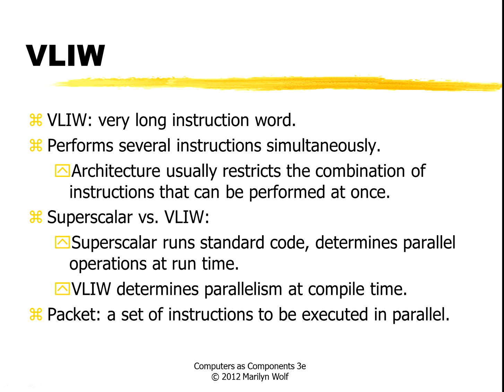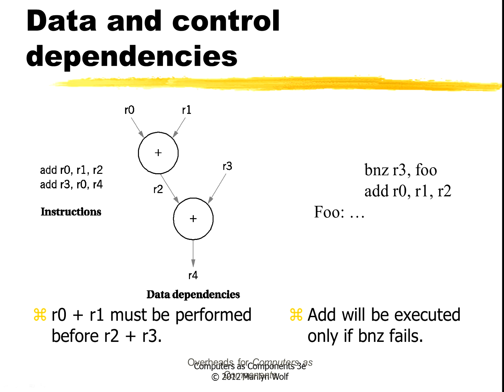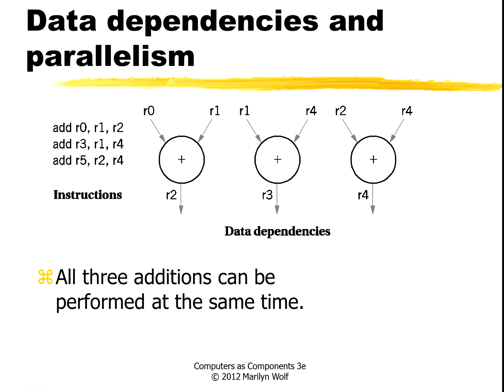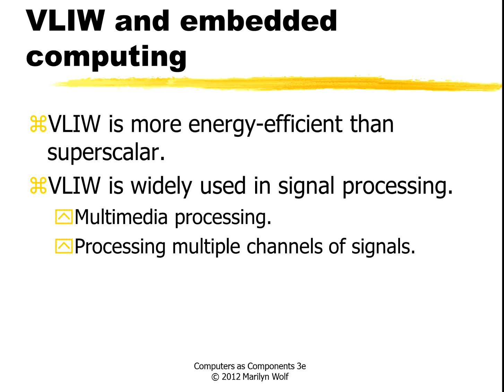In VLIW machines, a packet is a set of instructions to be executed in parallel. We determine whether instructions can run in parallel by examining data dependencies. For example, if the result of one addition feeds into the next addition, we can't execute those two at the same time. But if the results of different adds are not used in one another, they can all be done simultaneously. VLIW is used a lot in embedded computing systems, particularly high-performance ones. It allows high-performance parallel computing while being more energy efficient than superscalar.